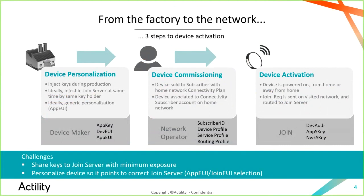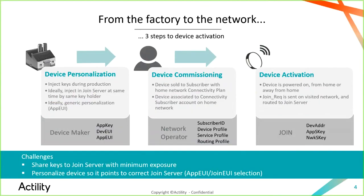In the second step, the device is commissioned, meaning it has been sold to the customer, and the customer has selected the connectivity plan from a connectivity provider and associated the device to their subscriber account. This is the point where it connects with a mobile network operator or an enterprise network. In the third step, when the device is activated and turned on the network, it performs the join procedure, which can happen on the home network or in roaming.